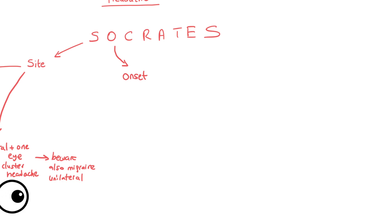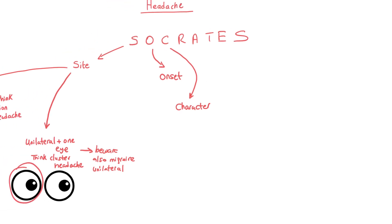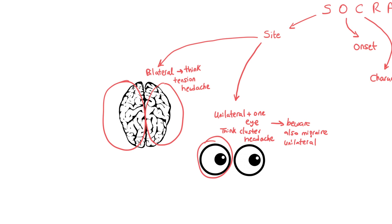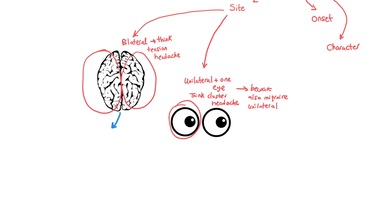The next thing you could ask is C — the character of pain. Going back to our illustration: tension headache, which we said was bilateral, is most commonly described by patients as a tight band sensation.